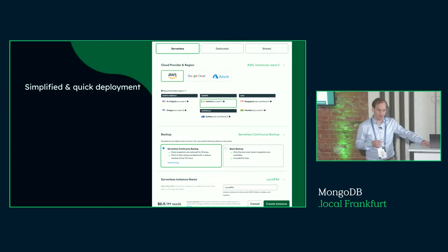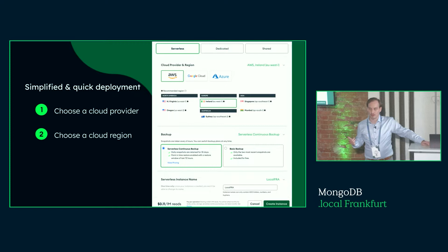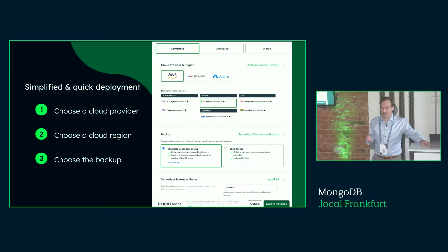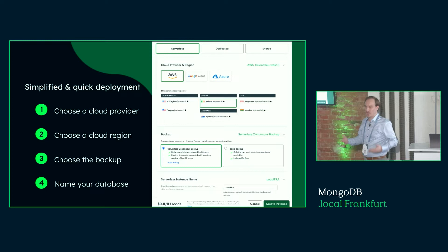Getting started with an Atlas Serverless Instance is simple — there are four decisions to make. First, choose your cloud provider and location, since even for serverless you may have data sovereignty regulations or GDPR requirements. Third, choose which backup method suits your needs. And the hardest decision: the name of your database. That's basically it — within a minute you have a fully functional MongoDB instance up and running.